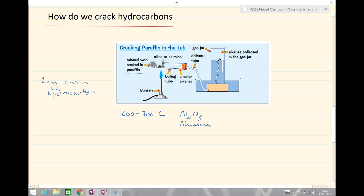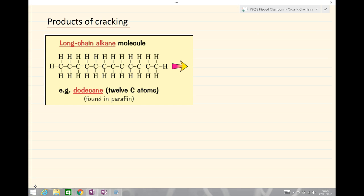So now let's have a look and see what the products are from cracking. Products of cracking: we start off with a long chain hydrocarbon or long chain alkane and we're going to make shorter chain alkanes.